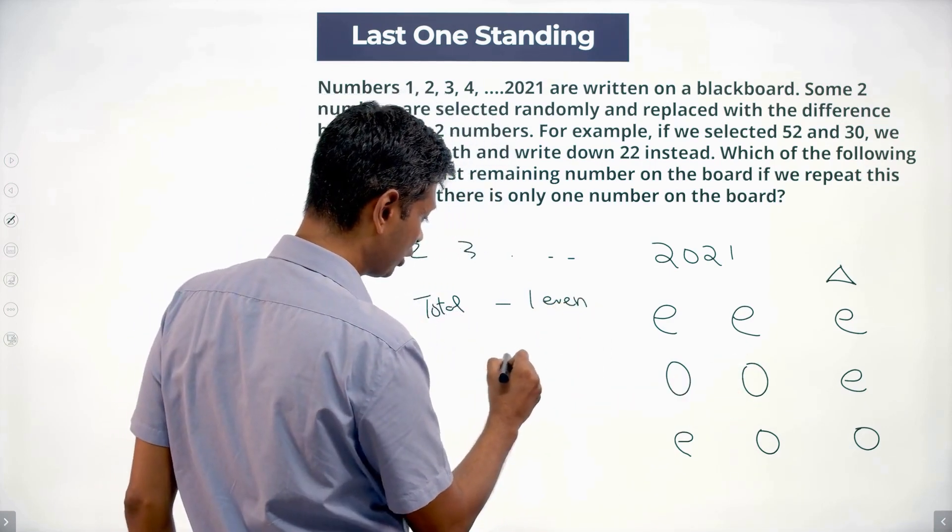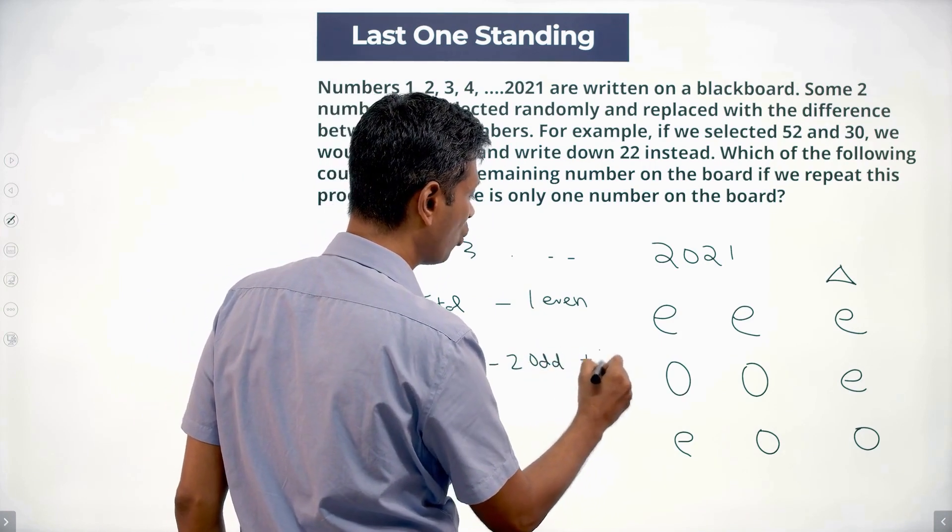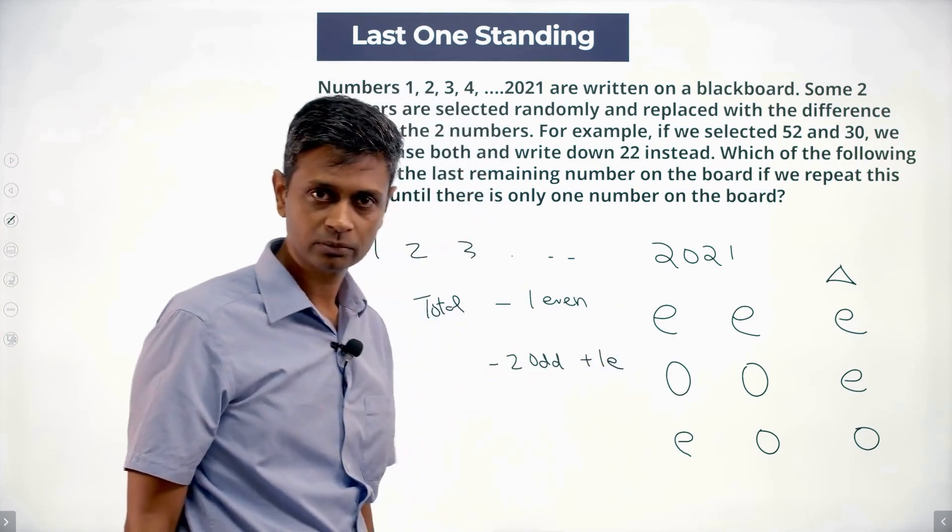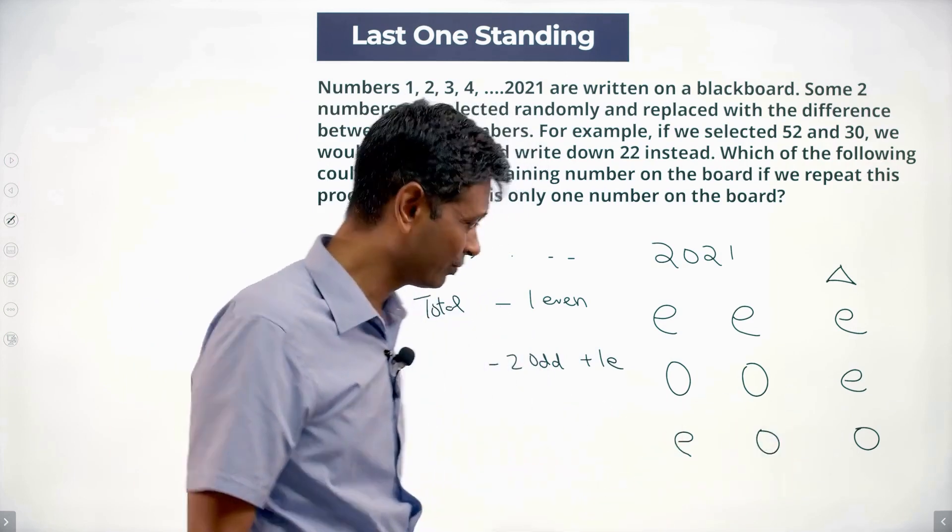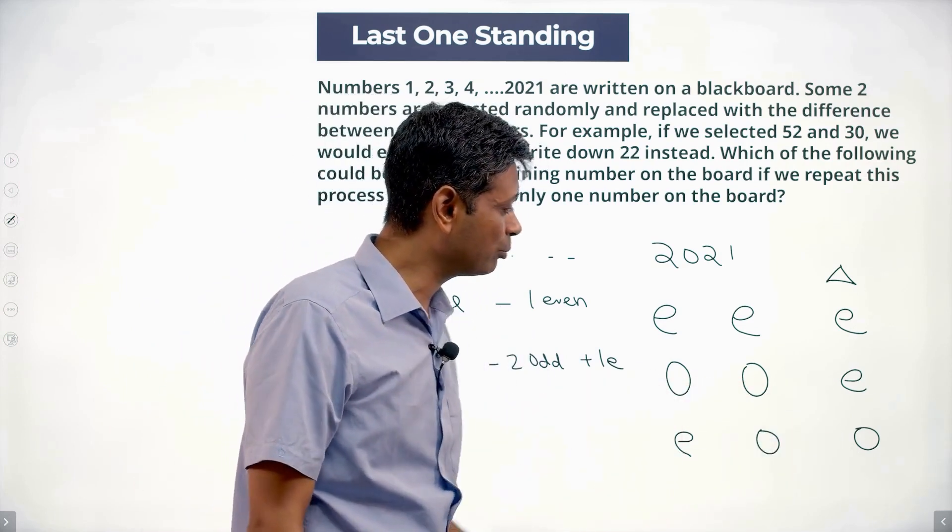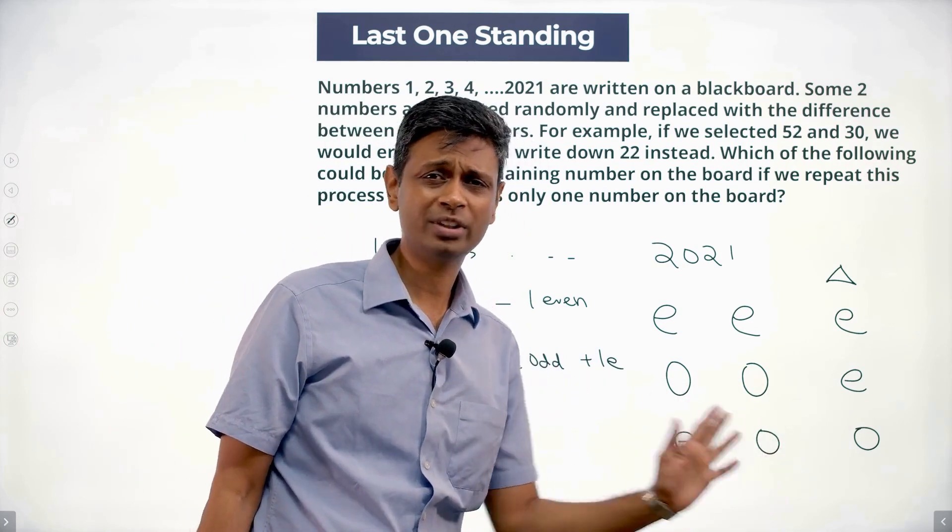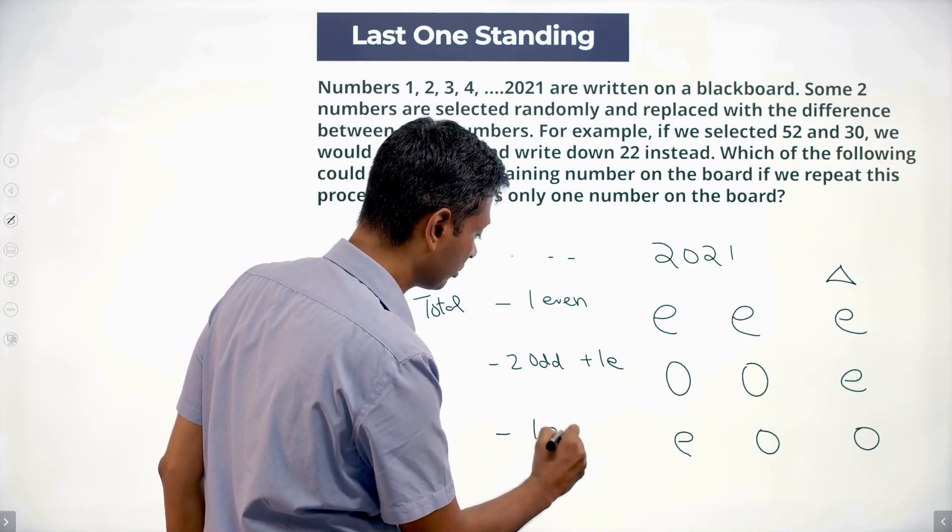I subtract two odd numbers and add one even number. If this happens, I take out an odd number, I put in an odd number. Odd number count does not change. I'll subtract one even number.